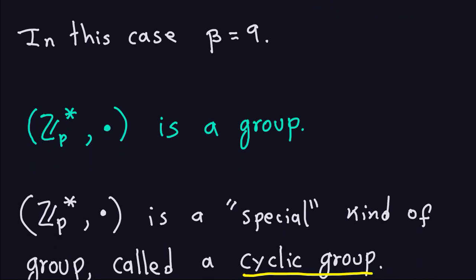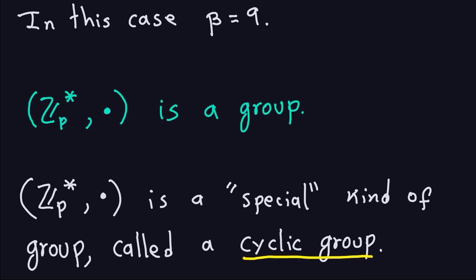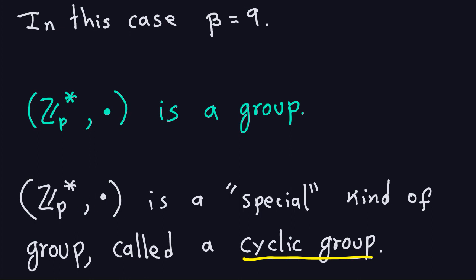In a group there are particular elements that behave very nicely, and that relates to the concept of a cyclic group. A cyclic group is itself a group but with an extra property — the property of being cyclic — which has to do with how particular elements behave inside Z_p*. I'll explain that in the next video, where we'll also show that Z_p* is cyclic. I'll stop here and see you in the next video.